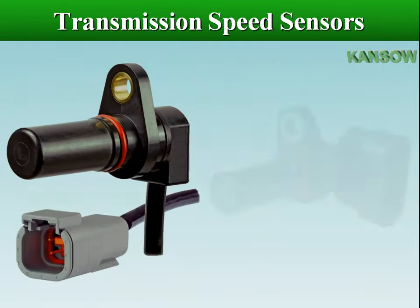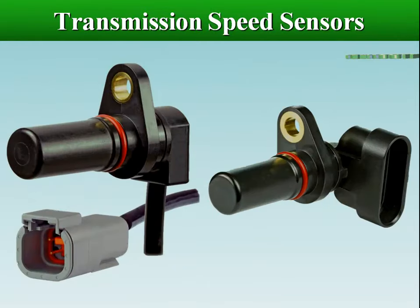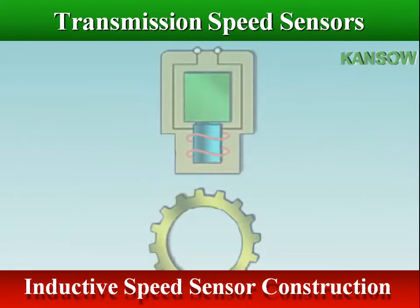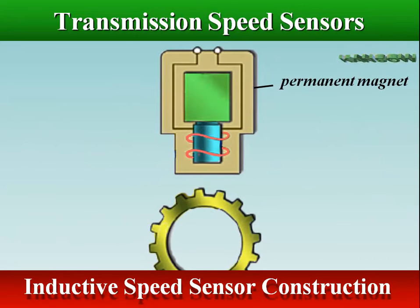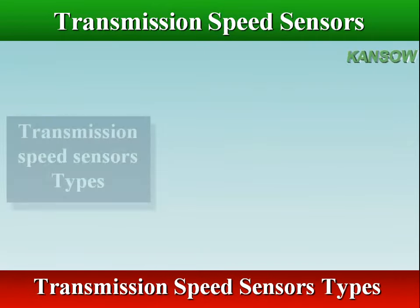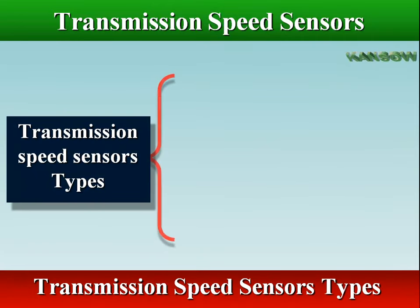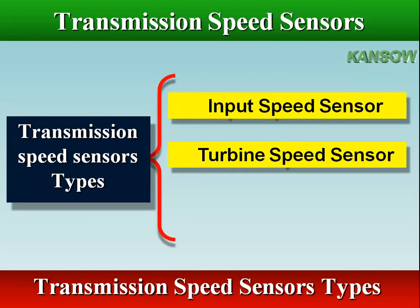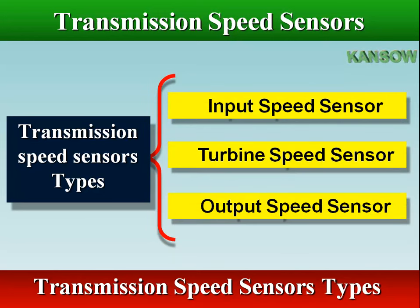Transmission speed sensors are active or inductive variants. The inductive speed sensor consists of a wire coil wrapped around a pole piece that is adjacent to a permanent magnet. There are different types of transmission speed sensors: input speed sensor, turbine speed sensor, and output speed sensor.